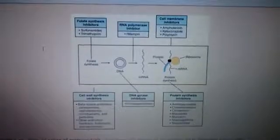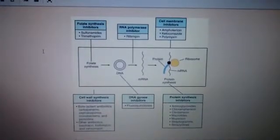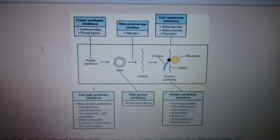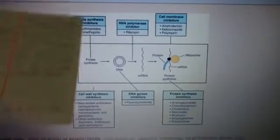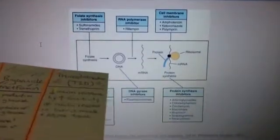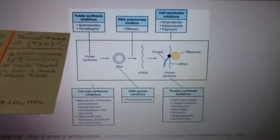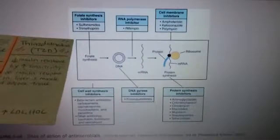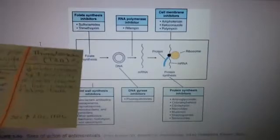Okay, now this is something I really like. I found this in the Crush Step 1 book, and this is a really nice picture of how these drugs are working. We can see a nice example of the cell. Folate synthesis inhibitors — we have the sulfonamides and trimethoprim. So here's the folate synthesis pathway, and these are going to stop that.